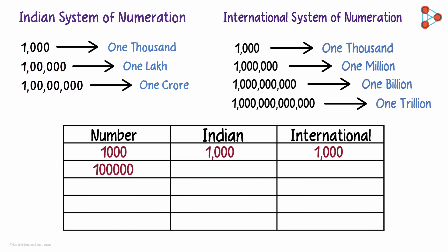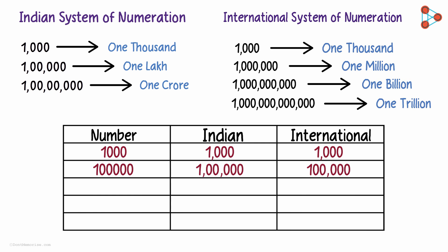Here's the next number. In the Indian system, we mark 1 comma 3 digits from the right and then one more after 2 digits — this gives us 1 lakh. What about this number in the international system? In this system it's just 3, 3, and 3 from the right. So we mark 1 comma 3 digits from the right, and then we stop as there are only 3 digits left — we can't really mark a comma there. So 1 lakh in the international system is nothing but 100,000.